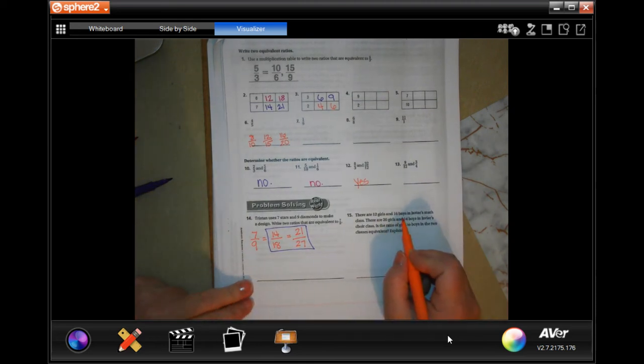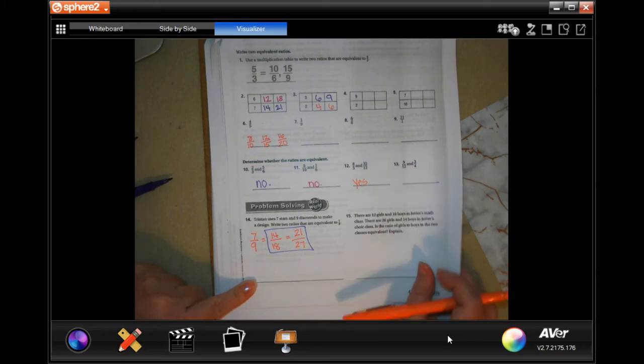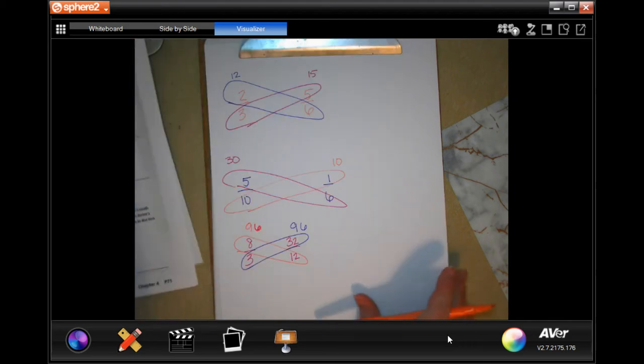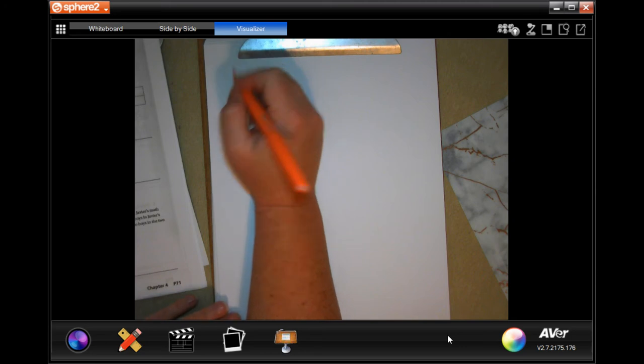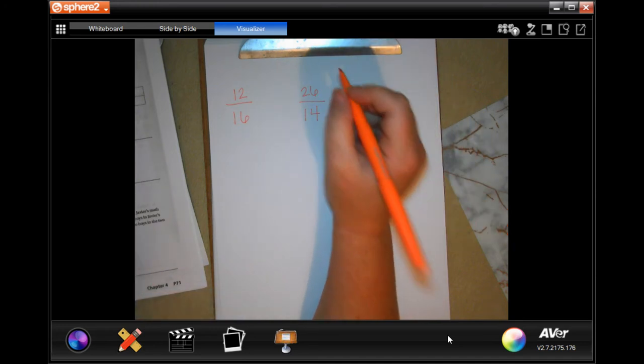There are 12 girls and 16 boys in Javier's math class. There are 26 girls and 14 boys in Javier's choir class. Is the ratio of girls to boys in the two classes equivalent? So we want to know if they're equivalent, so we're going to do our diagonal multiplication. So 12 girls, 16 boys, 26 girls, 14 boys.